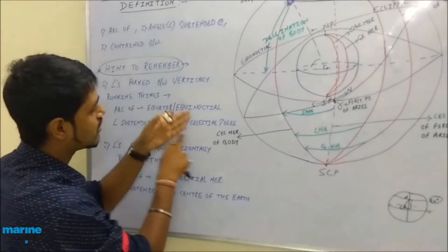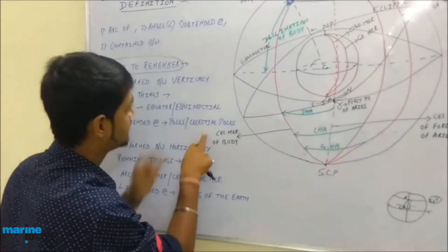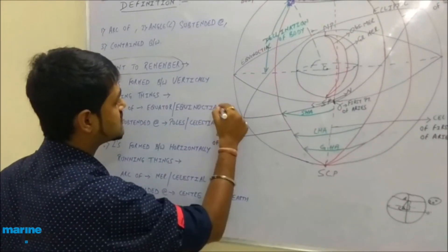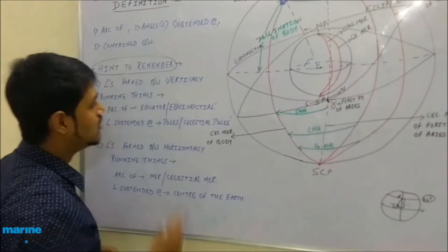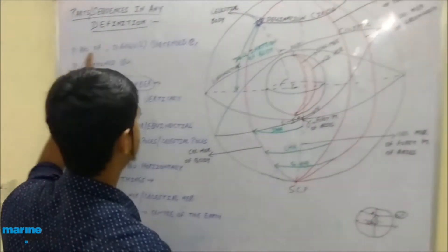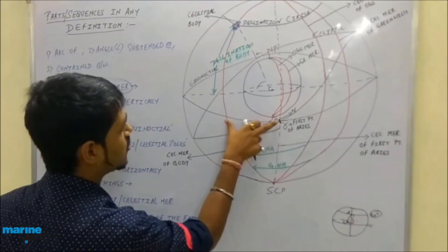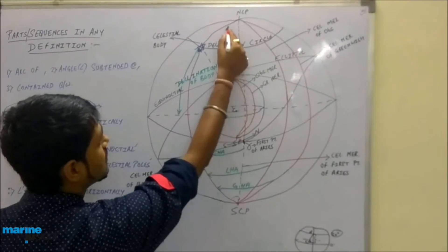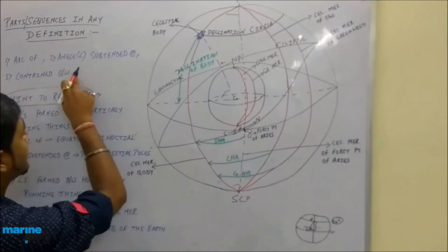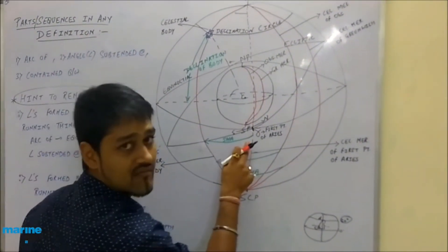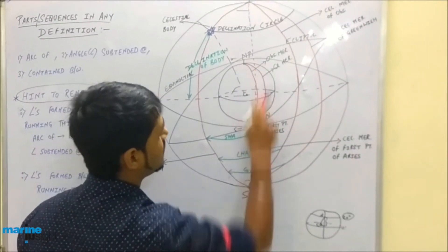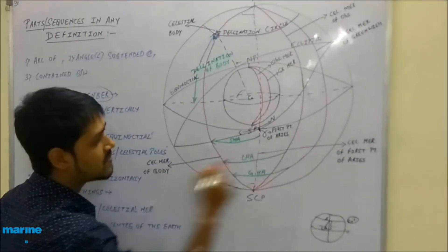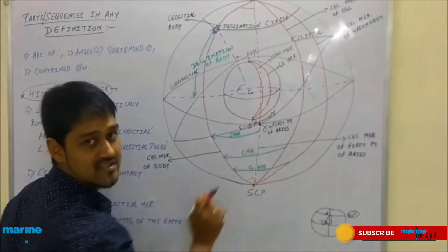For SHA, LHA, and GHA, since they are on the celestial sphere, SHA can be defined as: arc of the equinoctial or angle subtended at the celestial poles, contained between the celestial meridian of the first point of Aries and that of the body, measured westward from Aries.